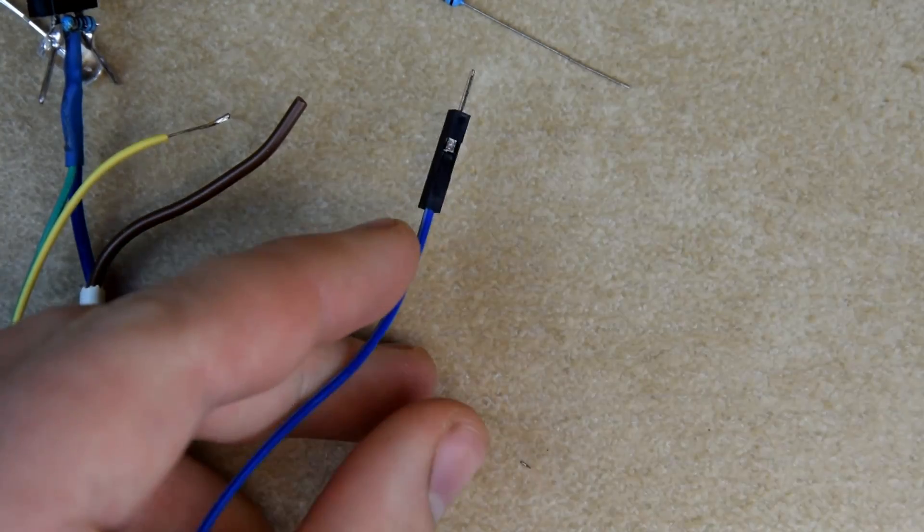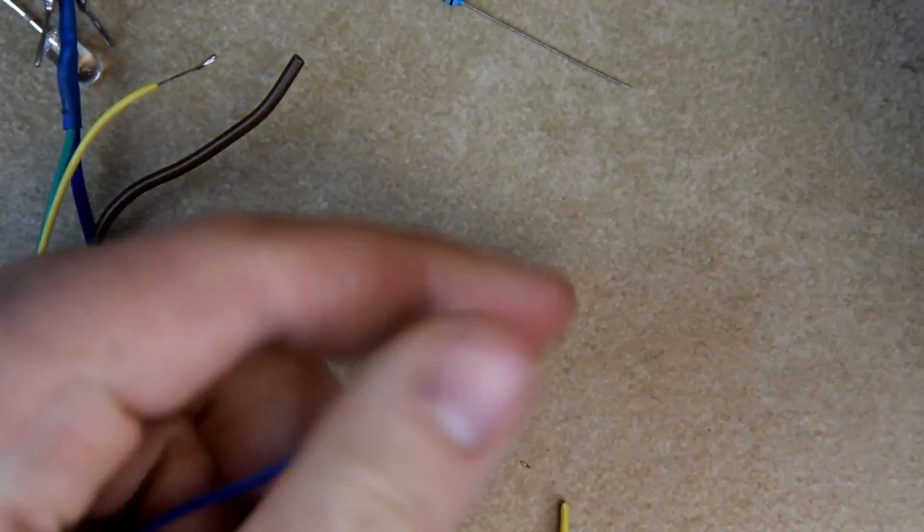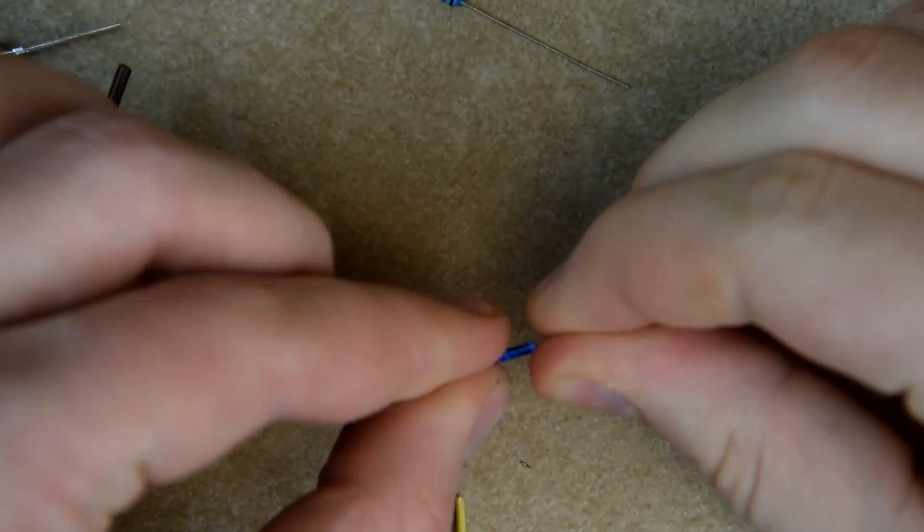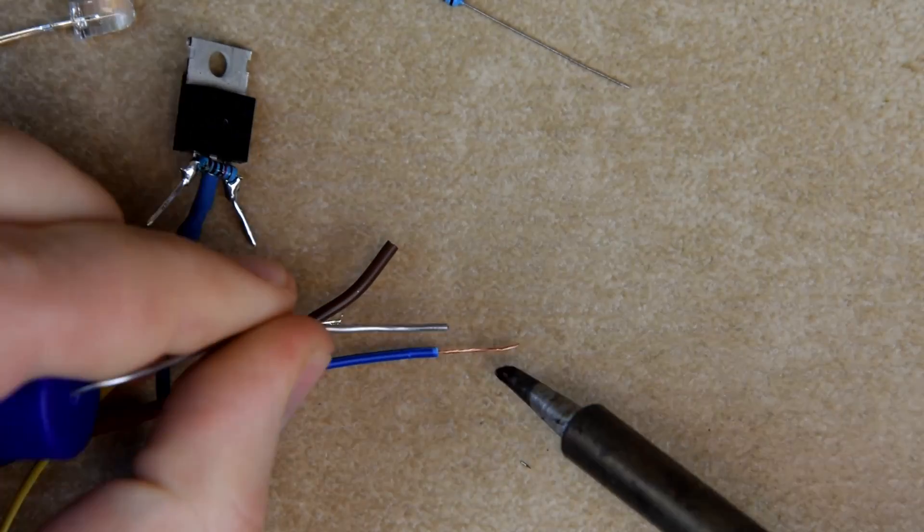Now let's make the cable connecting the gate to Arduino. To simplify the process, we'll use a jumper cable, cut off one end, remove insulation, thin it and solder it to the transistor, insulating with shrink tubing as usual.